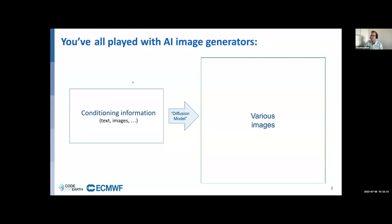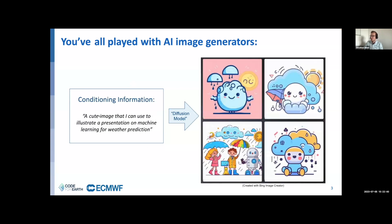Let's jump right in. I think probably all of you have played with one of these online AI image generators. They all work in the same way. You put in some conditioning information, usually a text description, which gets fed into a machine learning model called a diffusion model, and this produces various images. For example, you could ask for an image to illustrate a presentation.